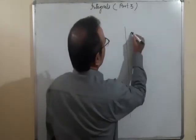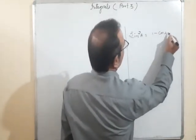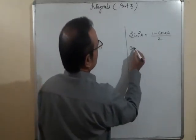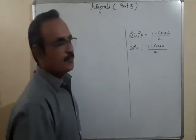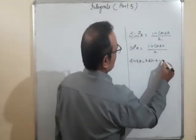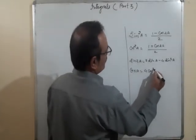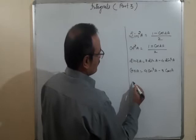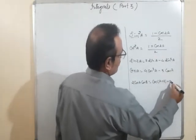Suppose if you have sin²A, this sin²A will be written as (1 − cos2A)/2, because the property is 1 − 2sin²A = cos2A. Second, if you have cos²A, you can use (1 + cos2A)/2.